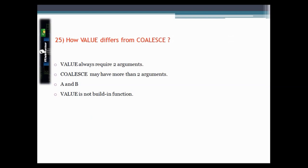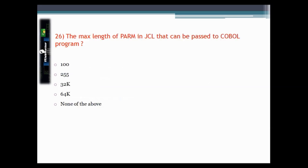This question asks how the VALUE function differs from the COALESCE function. Logically both are used for the same purpose, but the basic difference is that the VALUE function always requires exactly two arguments, while the COALESCE function may have more than two arguments. The correct answer is options A and B.